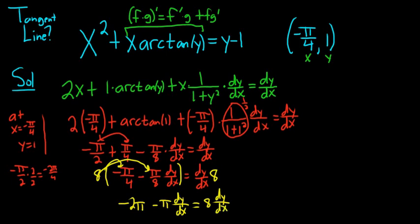All right, getting there. Now we can add pi dy dx to the other side. So we end up with 8 dy dx plus pi dy dx, and that's equal to negative 2 pi.